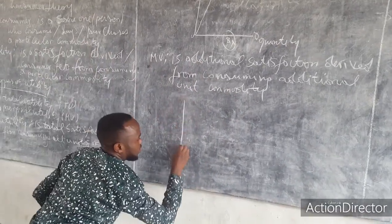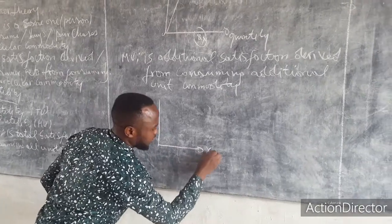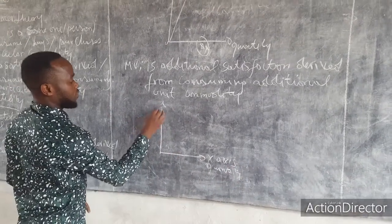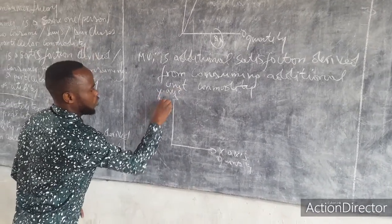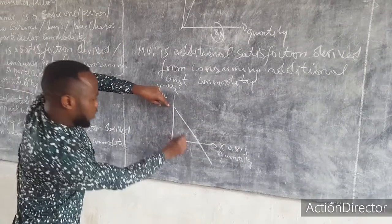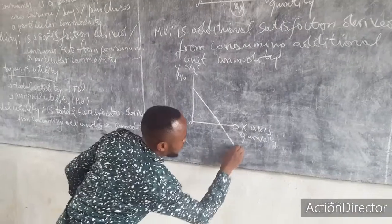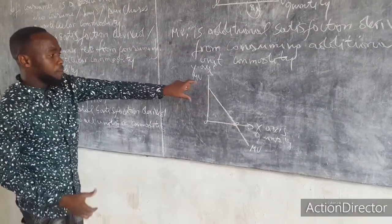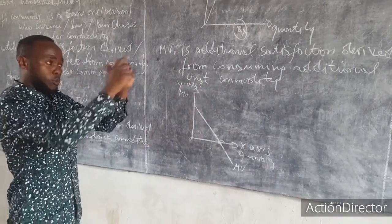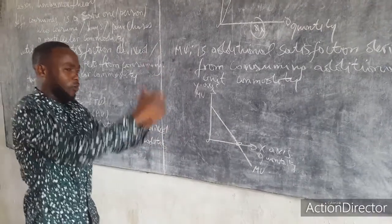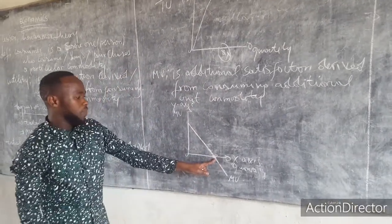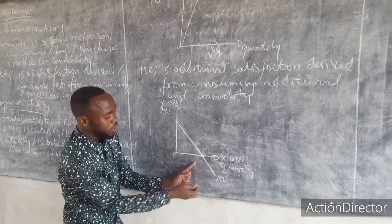Looking at the marginal utility graph, on the x-axis we have quantity and on the y-axis we have marginal utility. The MU curve starts at a higher level and then decreases as you consume more of the commodity. This diagram shows that as you add more units, the utility derived from each additional unit decreases. At the point where total utility is at its maximum, the marginal utility is equal to zero.